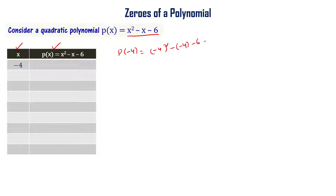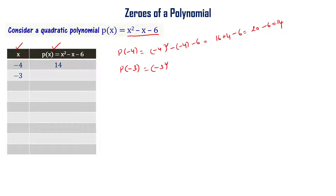For x equal to minus 4: p(-4) = 16 + 4 minus 6 = 20 minus 6 = 14. For x equal to minus 3: p(-3) = (-3)² minus (-3) minus 6 = 9 + 3 minus 6 = 12 minus 6 = 6.